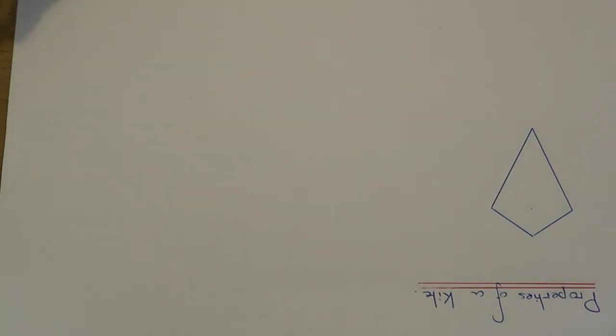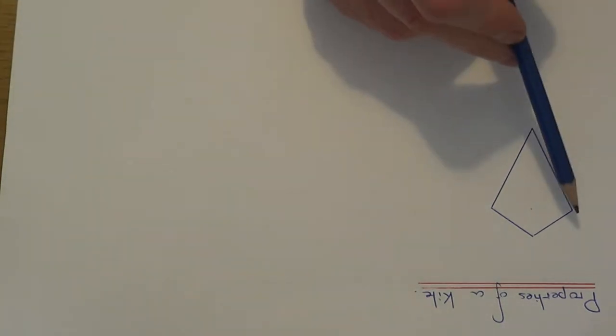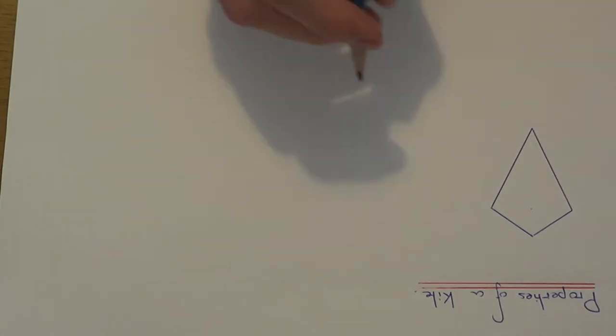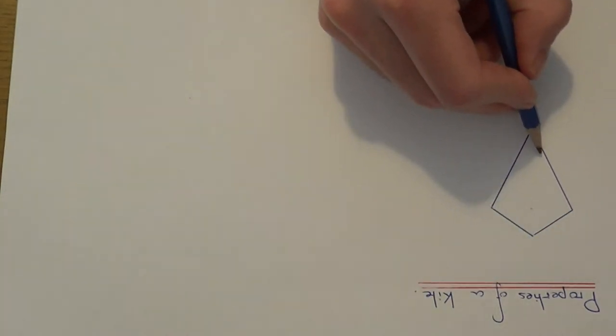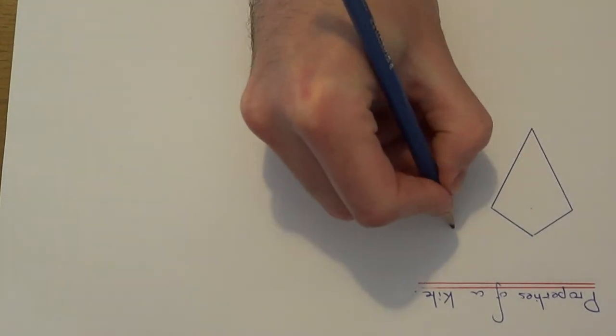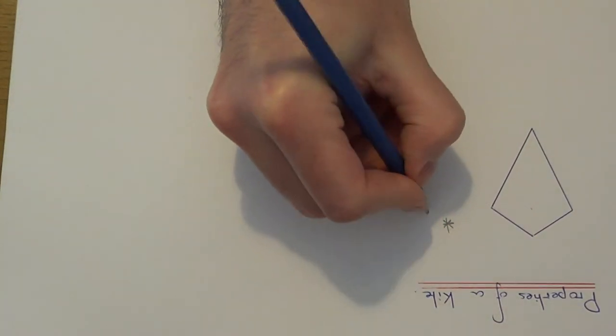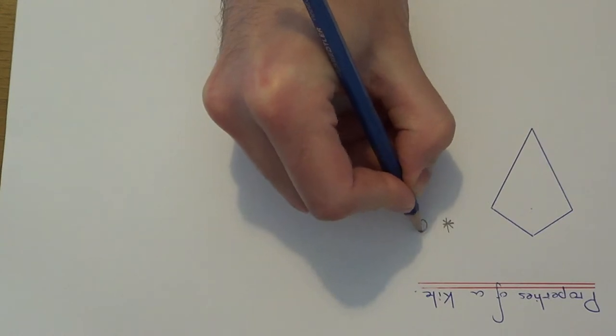Today I'm going to talk about the mathematical properties of a kite. The first thing about a kite is that it has four sides. So a kite is a quadrilateral.